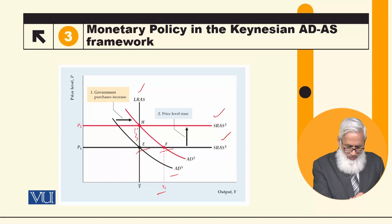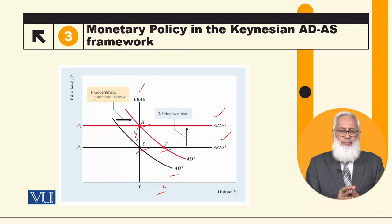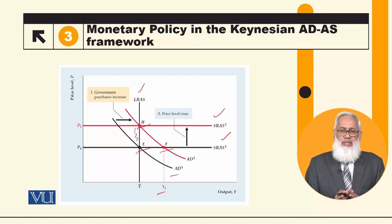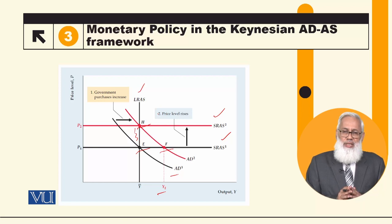In the long run, the economy will return to equilibrium. Money is non-neutral in the short run — it affects the real value of output. But in the long run, money is neutral. This is consistent with what we have discussed in the classical and Keynesian consensus: in the long run, money is neutral, but in the short run, within the Keynesian framework, money affects real output.